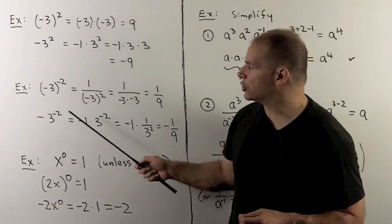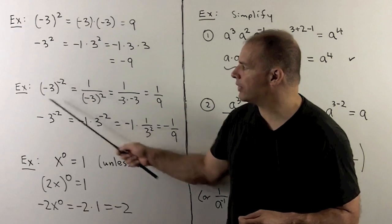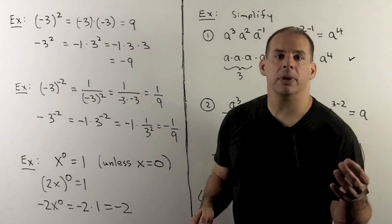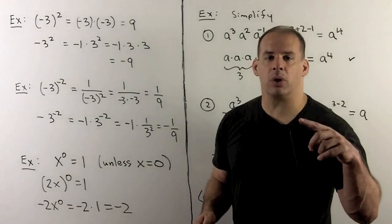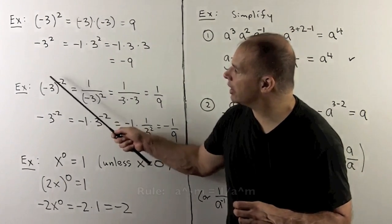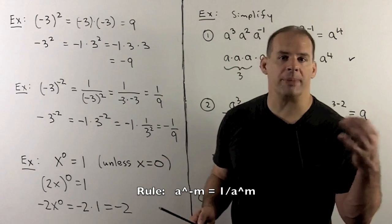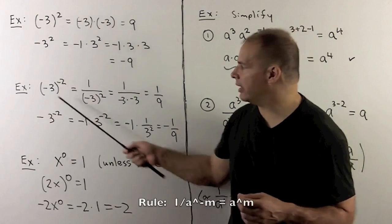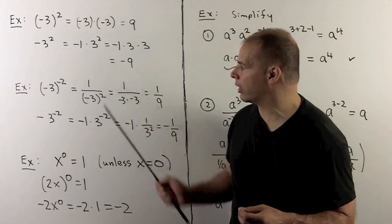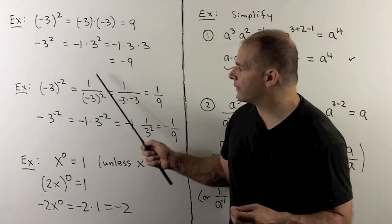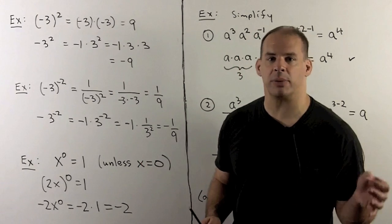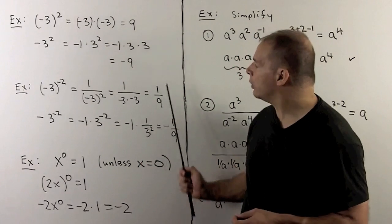Similar example — let's try minus 3 in parentheses to the minus 2. From before, we saw that if we have a negative exponent, we can push this item into the denominator to drop that minus sign. And if we had a fraction with this in the denominator, we can move it to the numerator. Here, I have minus 3 squared in the denominator, so it's minus 3 times minus 3, which gives me a 9. We get 1 ninth.